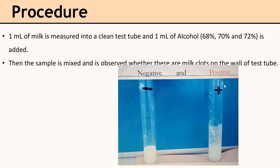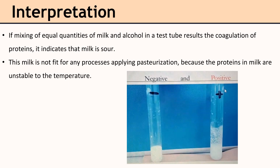In the picture you can see how to observe the negative results and also the positive results. If mixing equal quantities of milk and alcohol in the test tube results in coagulation of proteins, it indicates that the milk is sour. This milk is not fit for any process applying pasteurization because the milk proteins are unstable to the temperature.